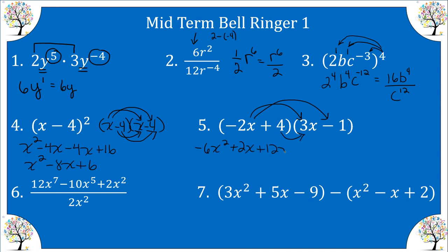Now let's distribute the four. We get plus 12 X, and then we get minus four. Combine your middle terms. Negative six X squared plus 14 X minus four. Another quadratic trinomial.